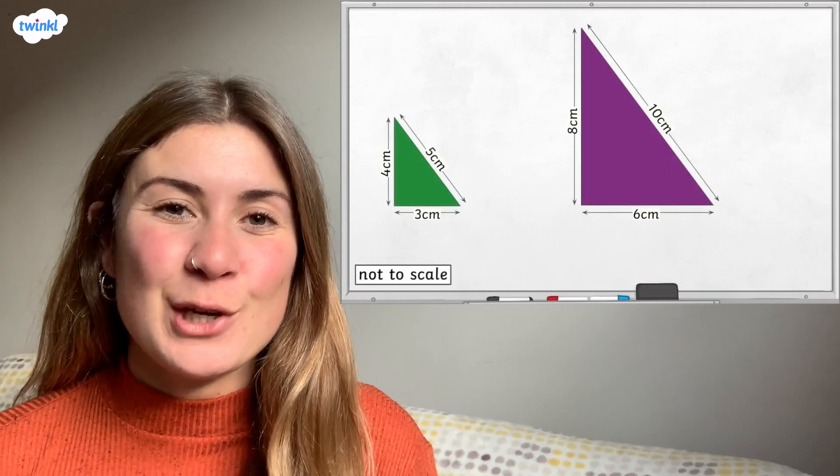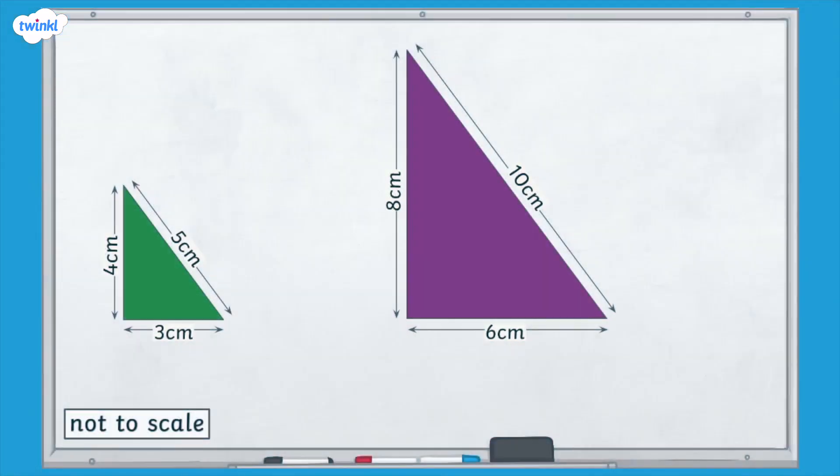Let's begin by looking at these two triangles. We can check if the shapes are similar by labeling the corresponding sides, the sides which are in the same position within the shapes. On the green triangle, side A is 3 centimeters, side B is 4 centimeters, side C is 5 centimeters.